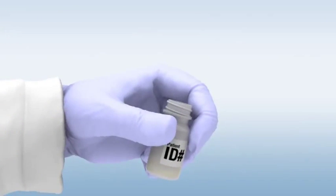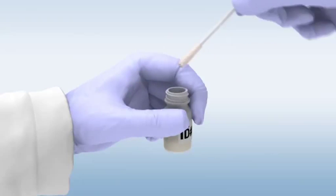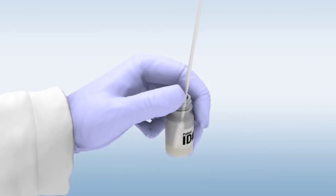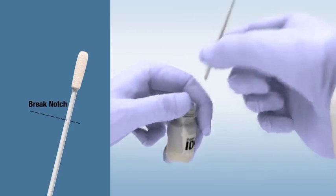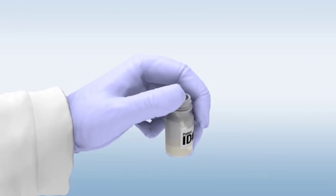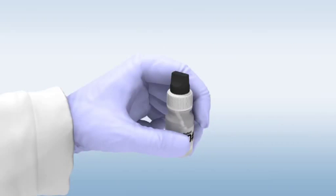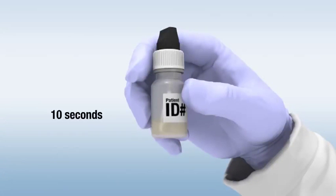Place the collected sample into the labeled black cap sample tainer. Ensure that the swab rests on the bottom of the bottle. Gently break the swab by applying pressure to the shaft at the brake notch. Place the white cap with the upper black cap back onto the sample tainer containing the swab tip. After securing the cap tightly, gently shake the bottle back and forth for 10 seconds. The sample is now ready for testing.